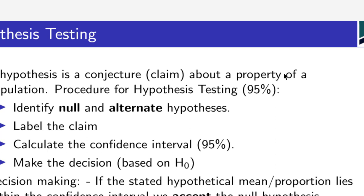We're going to be 95% sure — in other words, there's a 5% chance we're wrong. In hypothesis testing we call that alpha, so alpha equals 0.05. That is the chance that we are incorrect in rejecting the null hypothesis. You're never 100% sure in these things. We're going to be 95% sure at the Leaving Cert level. The procedure is: identify the null and alternate hypothesis.